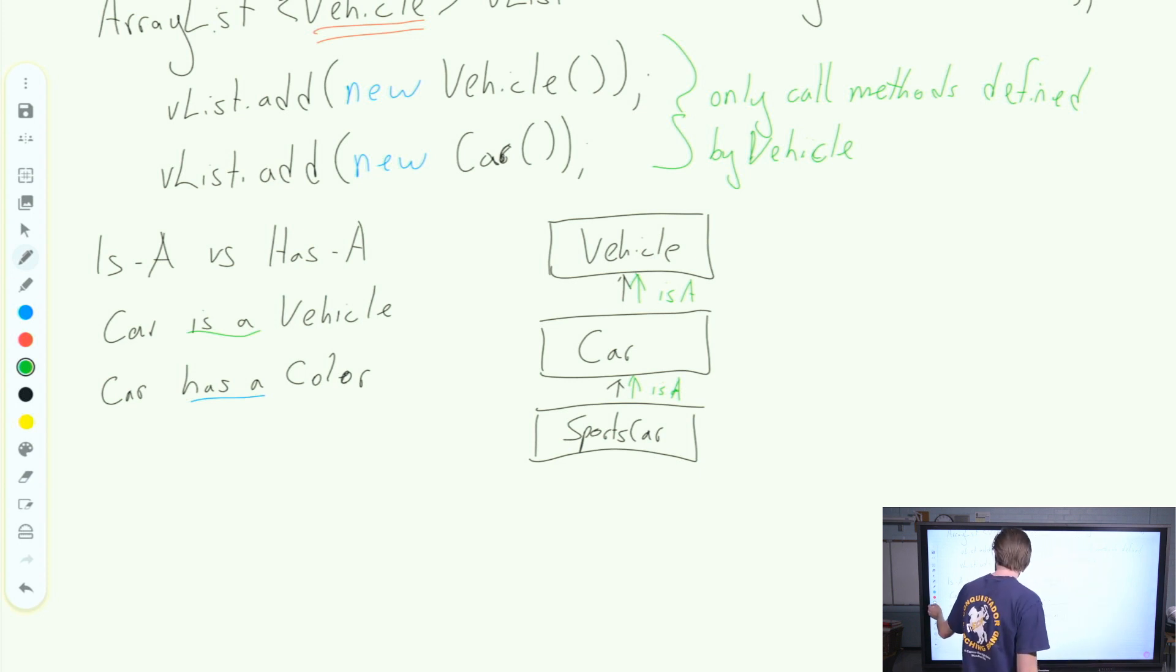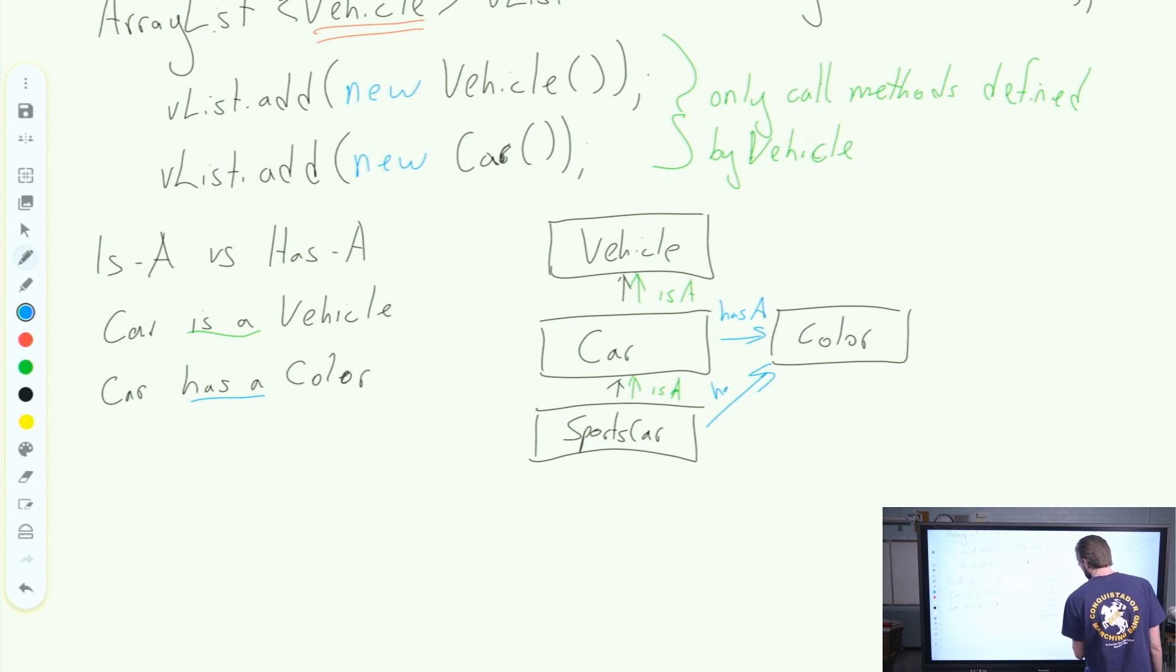However, the color really sits over here on its own tree, and perhaps it inherits from another class, or other classes might inherit from it, but really, the car has a color in this relationship. It has a, and the sports car has a color. And a vehicle might have a color. But the color does not extend. It doesn't add to car. It's part of car.